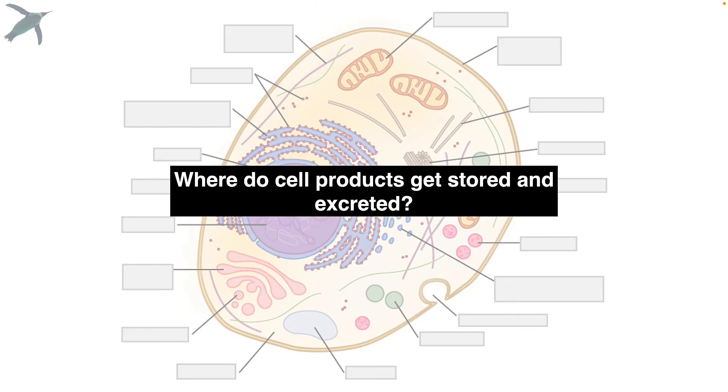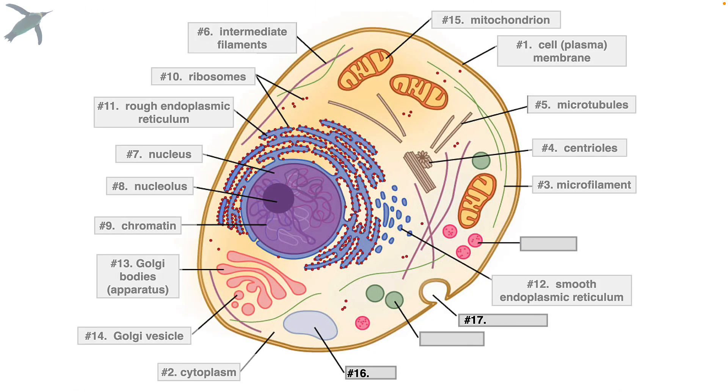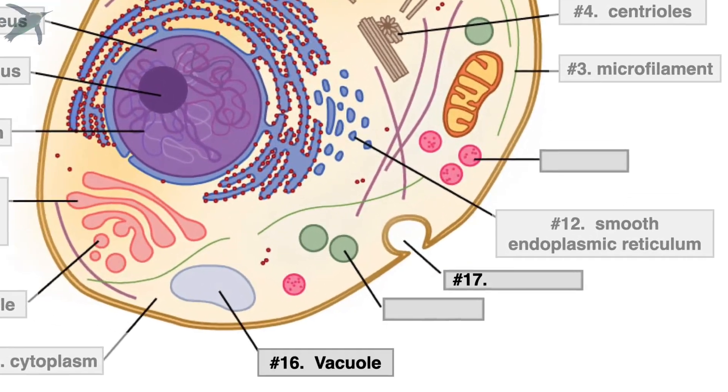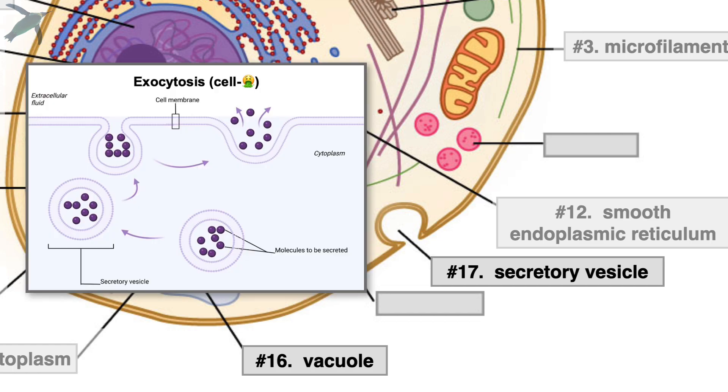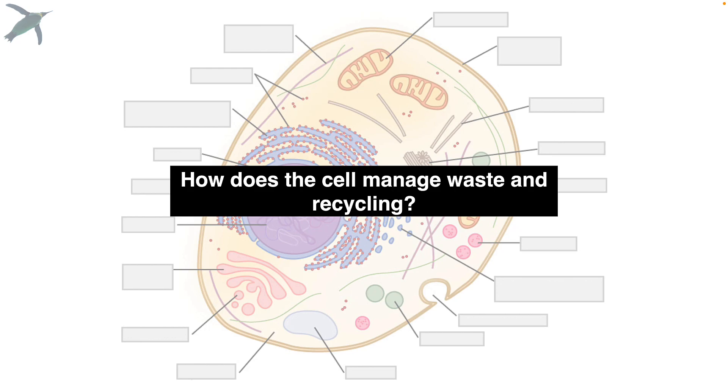Where do the cell products get stored and excreted? These are easy. So number 16 here, this is just called a vacuole. And number 17 is called a secretory vesicle. That is where exocytosis, or what I like to call cell barfing, takes place. We are almost done.